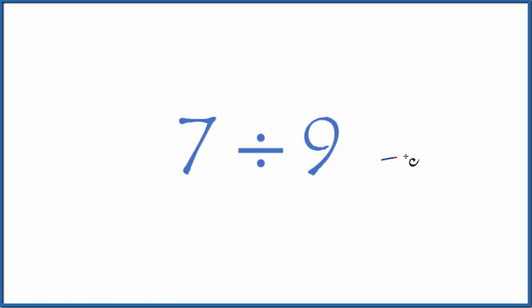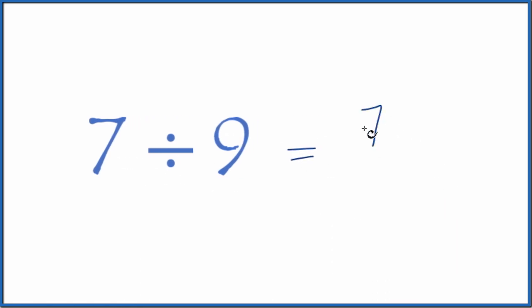First off, let's consider 7 by 9 as a fraction, which is just 7 over 9, 7 ninths. So that's a fraction.